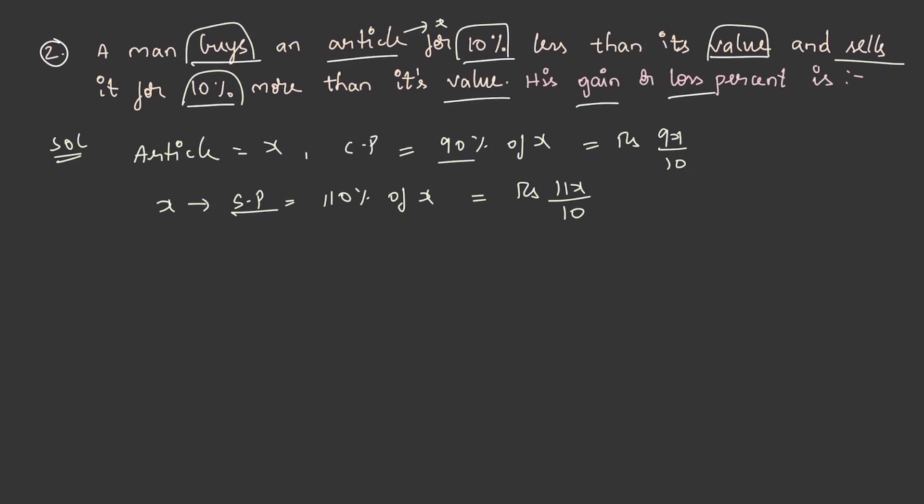We know the selling price as well as the cost price. Now, gain is equal to 11x by 10 minus 9x by 10, which is equal to rupees x by 5. It is gain because the selling price is greater than the cost price.